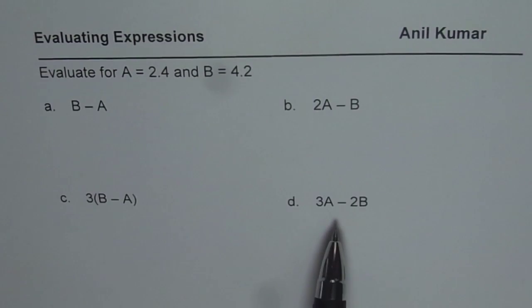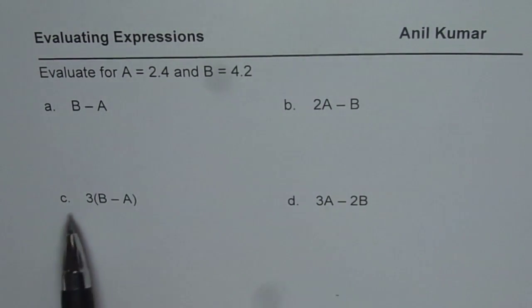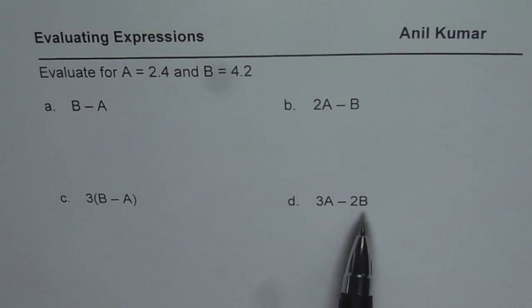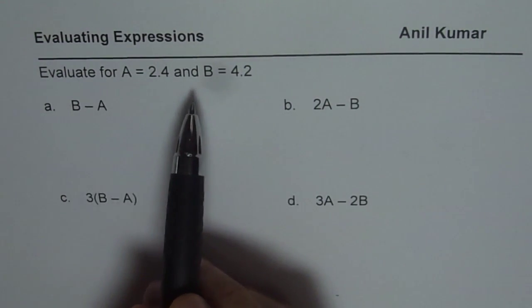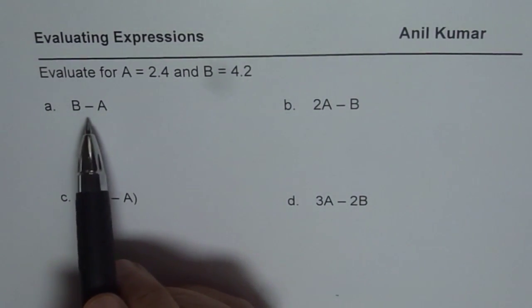Evaluate for A equals 2.4 and B equals 4.2. We have four expressions here. The first one is B minus A, the second one is 2 times A minus B, then 3 times B minus A, and 3 times A minus 2B. So whenever you evaluate, you need to substitute the value of the variable and then evaluate.